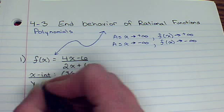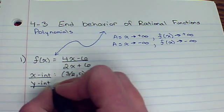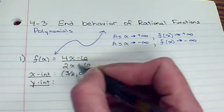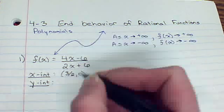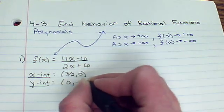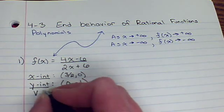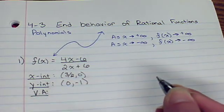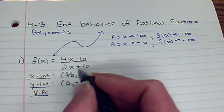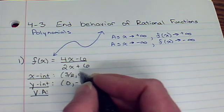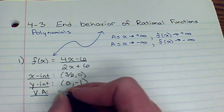Our y-intercept is found by letting x be 0. So when we let x be 0, we get negative 6 over 6, which is just going to be negative 1. Our vertical asymptote occurs when the denominator is 0. So what would make that be 0? Negative 6 divided by 2, that's negative 3.